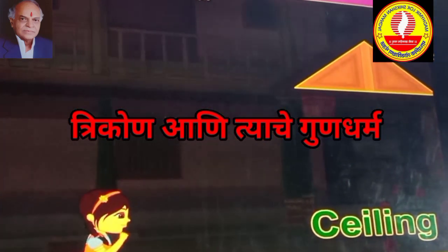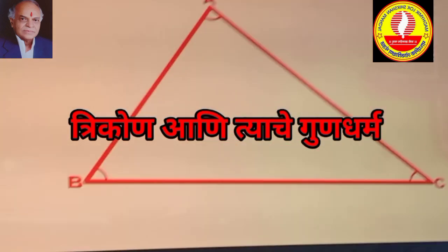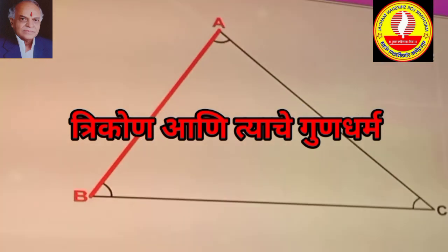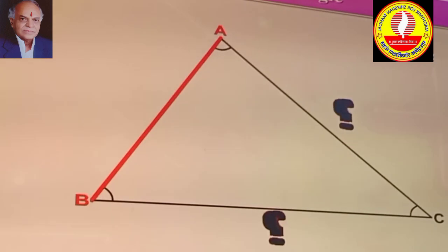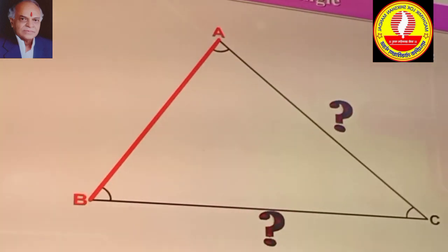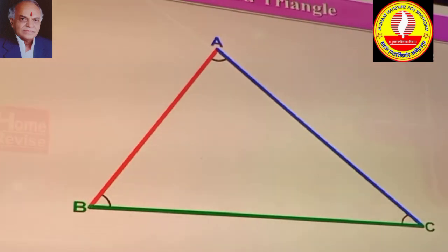ABC is a triangle. Suppose AB is one side of a triangle, then can you name other two sides of it? Side AC and side BC are the other two sides of a triangle.